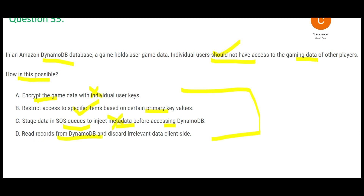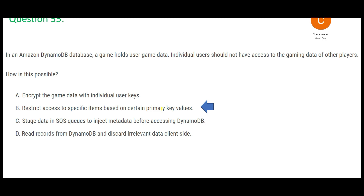Option D says read all the records from DynamoDB and discard the irrelevant ones. That means I will extract all the data, I can see your data and many other users' data, and then I myself decide not to look at it. You are trusting the user. What if I am a corrupt user and I read and see your data? This solution will not work because the system cannot be designed to trust the individual user. Option B is the right answer.